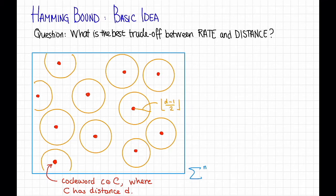Just as we saw before all of these balls are going to be disjoint from each other because they have radius d minus 1 over 2, the floor of that, and every pair of these points is at least d apart since c has distance d.